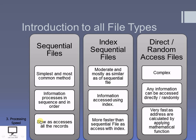Since all records are accessed sequentially in a sequential file, the processing speed is very slow. The index sequential file is faster than the sequential file because records are accessed with the help of an index. The direct or random access file is the fastest method because addresses are calculated using a mathematical function, allowing direct access to any particular record.